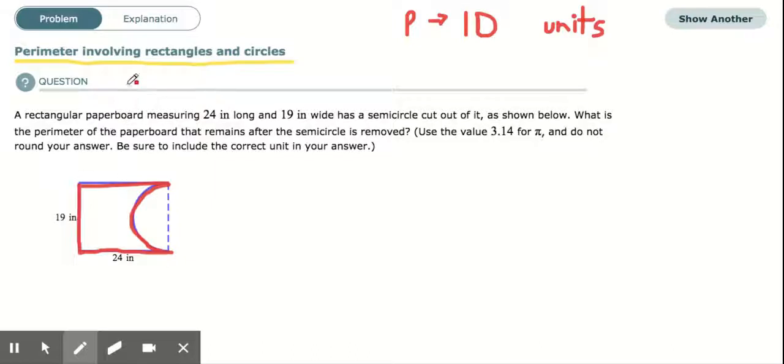Let's read the problem and go over this together. A rectangular paperboard measuring 24 inches long and 19 inches wide has a semicircle. Remember, the prefix semi means it's a half of a circle. Cut out of it. Cut out tells us that we're taking it away, not adding it to it. As shown below, what is the perimeter of the paperboard that remains after the semicircle is removed? Use the value of 3.14 for pi and do not round your answer. Be sure to include the correct unit in your answer.